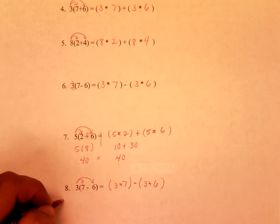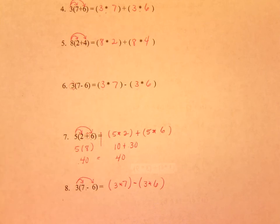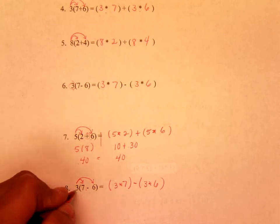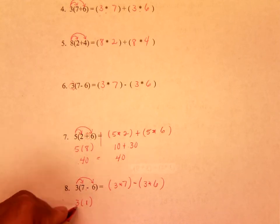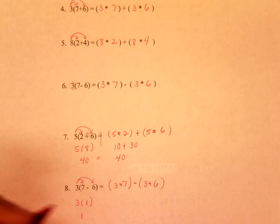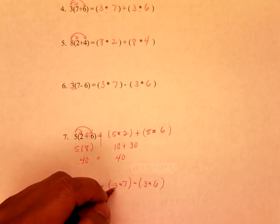Go ahead and try number 8 on your own. And when you're ready, push play. So, you should have done 3 times 7 minus 6 is 1. 3 times 1 is 1, is equal to 3 times 7 is 21, minus,